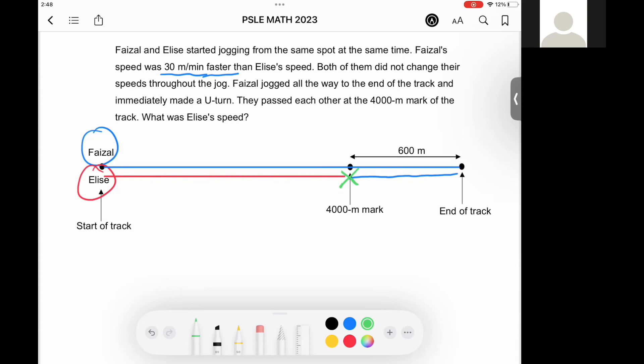Now we can see that Faiza actually ran a longer distance than Elise. In fact, he ran an extra distance of 1200 meters compared to Elise because his speed was faster.